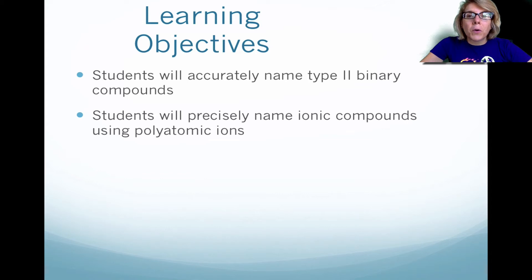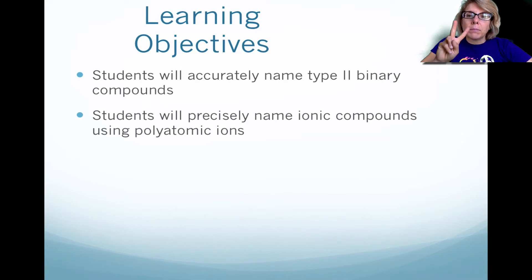Hi, this is Mrs. Robel. This is Chapter 7, Ionic Compounds and Metals, Part 2. In this video, we're going to look at Type 2 binary compounds, and then we're going to name ionic compounds using polyatomic ions.